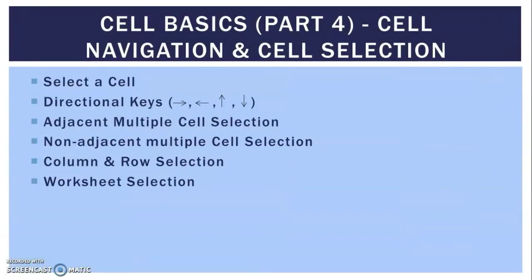In cell basics part 4, we are going to study cell navigation and cell selection. We are going to learn how to select a particular cell, directional keys — that is left, right, up and down arrow keys for movement, adjacent multiple cell selection with the help of mouse, non-adjacent multiple cell selection with the help of the control key, column and row selection, and complete worksheet selection. So let's see this in Excel.